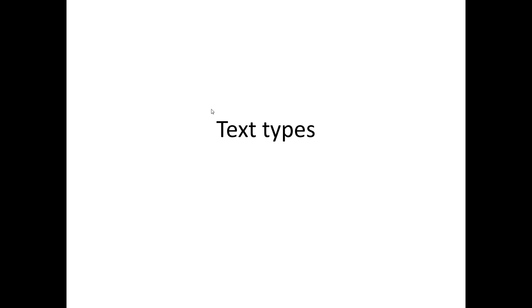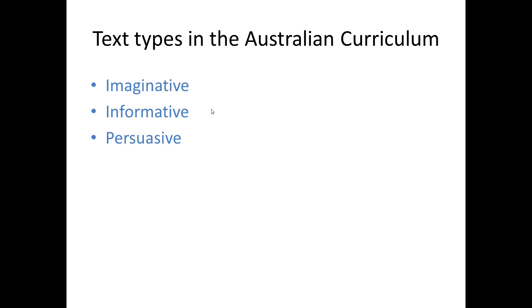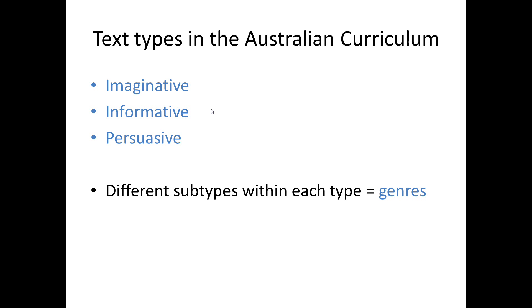Texts can be classified into types according to what their overall purpose is. Different types of texts have different structural properties. The Australian Curriculum divides texts into three main types: imaginative, informative, and persuasive. Within each of these broad types we can find a number of different kinds of text. These subtypes of texts are often known as genres.